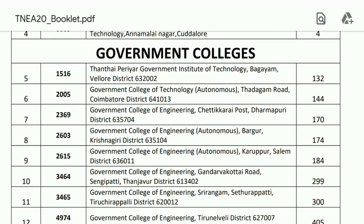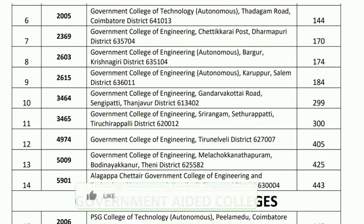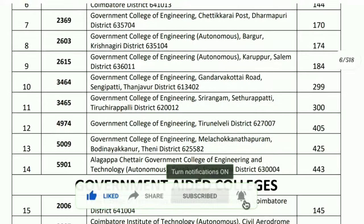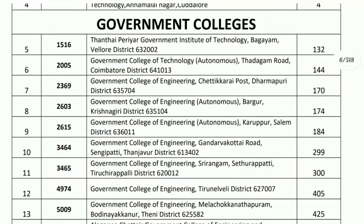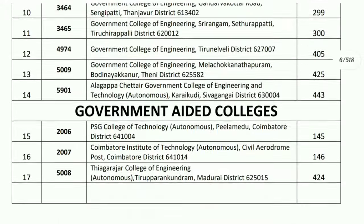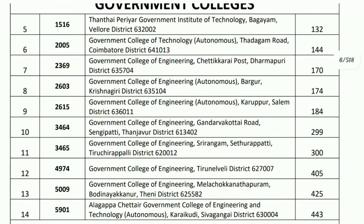The TNEA booklet has 518 pages. You can download all college details from it. There is a list of government colleges, government-aided colleges, and self-financing colleges available in the description box.